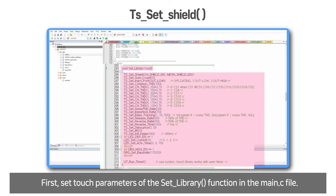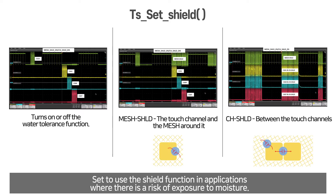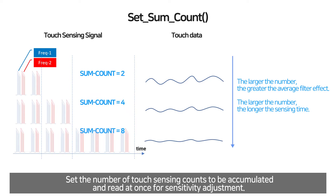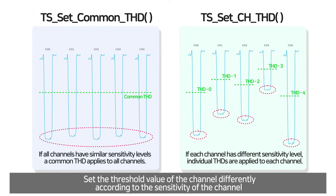First, set the touch parameters of the set library function in the main C file. Set to use the shield function in applications where there is a risk of exposure to moisture. Set the number of touch sensing counts to be accumulated and read for sensitivity adjustment. Set the threshold value of each channel differently according to the sensitivity of the channel.